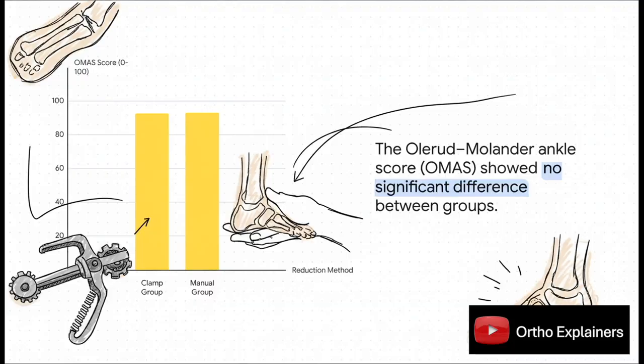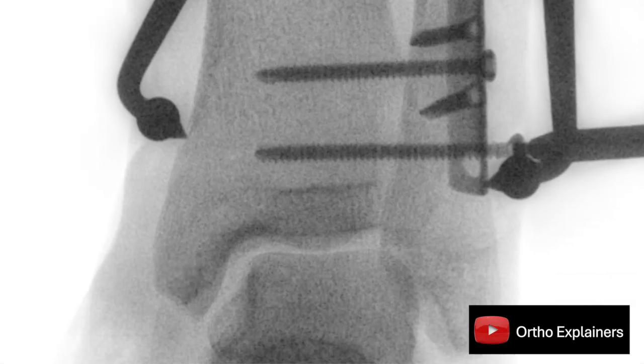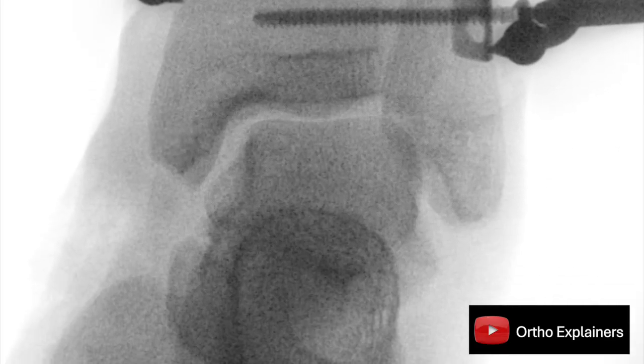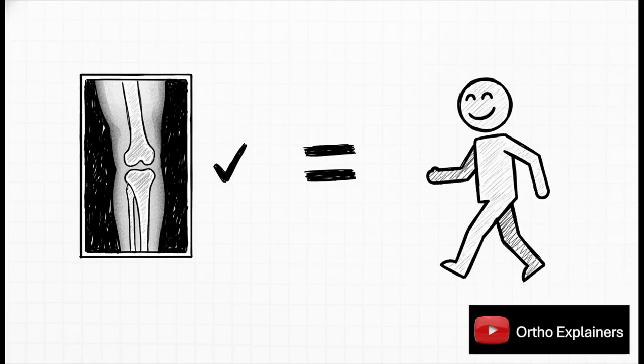So what does this all mean? It means that despite looking tighter on an x-ray, the clamp method offered absolutely no real-world benefit to the patient. Patients in both groups said they had the same amount of pain, they had the same range of motion, and they got back to work at pretty much the same time. That tighter fix? It just didn't matter.